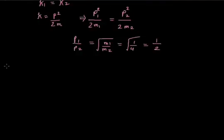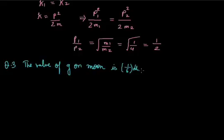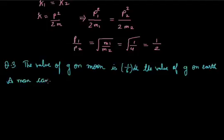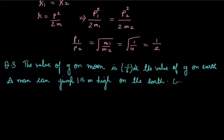Now let us discuss another question. The value of g on Moon is 1/6 the value of g on Earth. A man can jump 1.5 meter high on Earth. Calculate how high he can jump on the Moon.